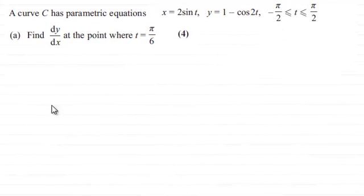Hi there. Now for this question we're given the curve C has parametric equations x equals 2 sine t and y equals 1 minus cosine of 2t, where t is greater than or equal to minus pi upon 2 but less than or equal to pi upon 2. In the first part we've got to find dy by dx at the point where t equals pi upon 6 for 4 marks.